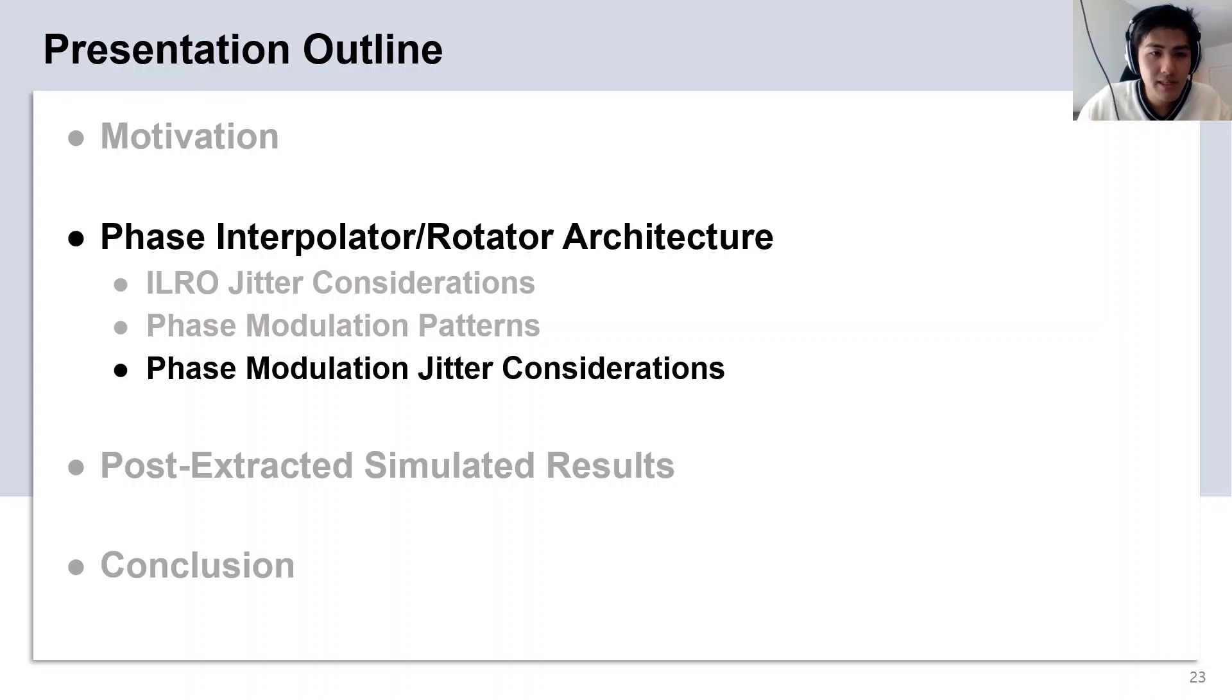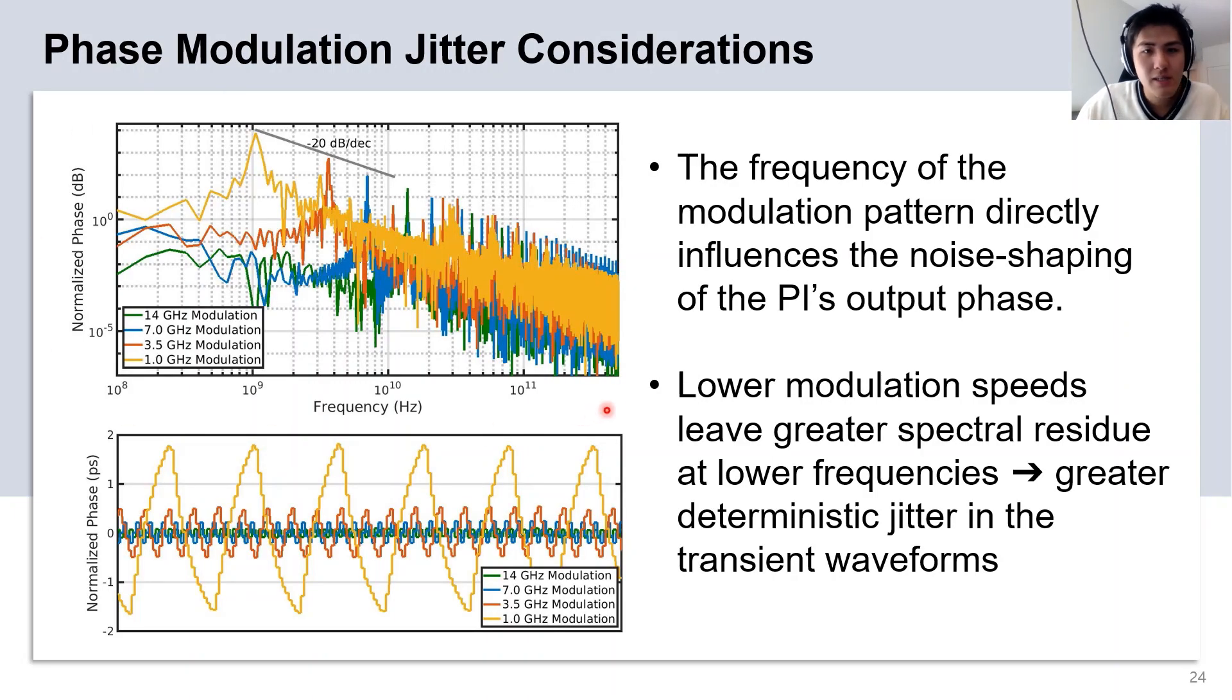Next, I want to talk about the jitter considerations of performing phase modulation. Here, we plot a fast Fourier transform of the ILO's output phase.